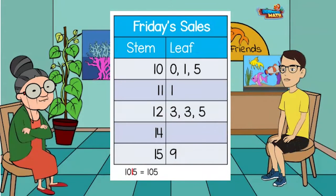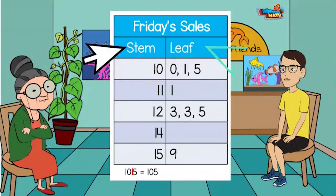I don't want to talk about gardening, Gilbert. I want to talk about sales. The name is Gilbert and we are not talking about gardening. A stem and leaf plot is another way to chart data. The stem, or beginning of the number, is represented in the left column of the chart, and the leaf, or ending number, is represented in the right column of the chart.